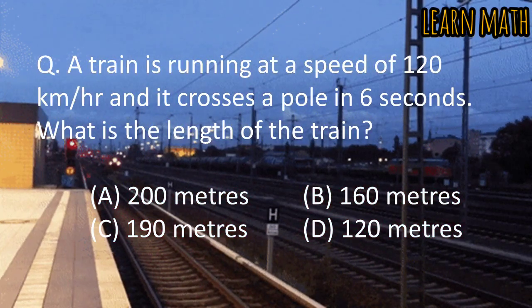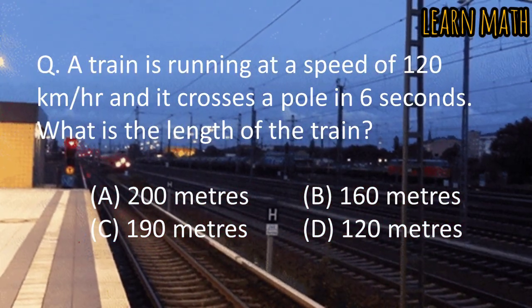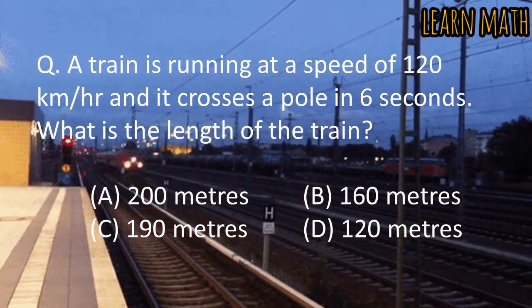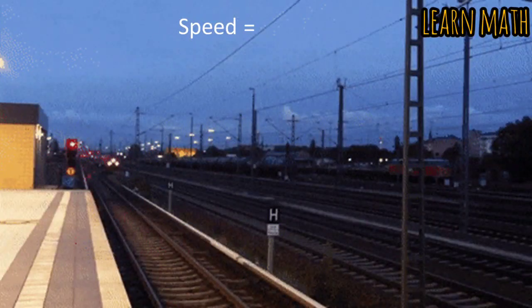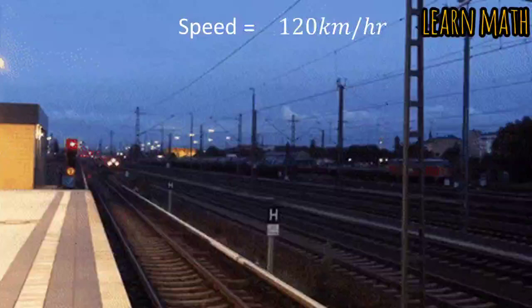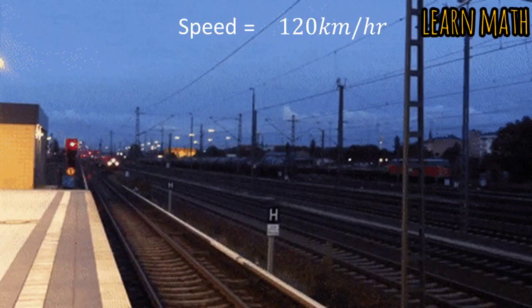The length of the train will be the distance covered by the train in 6 seconds. The first thing we will do is convert the speed 120 km per hour to meter per second.